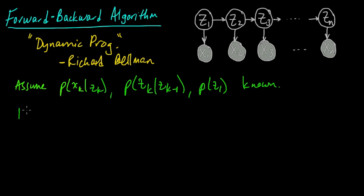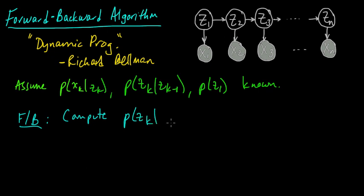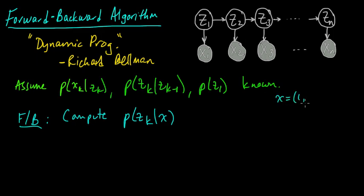What the forward-backward algorithm does — the goal of the forward-backward algorithm — is to compute the probability of ZK given X, where X denotes the full sequence X1 up to XN. So X will be the vector of all the X's.